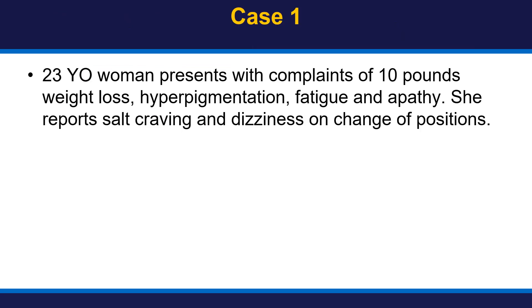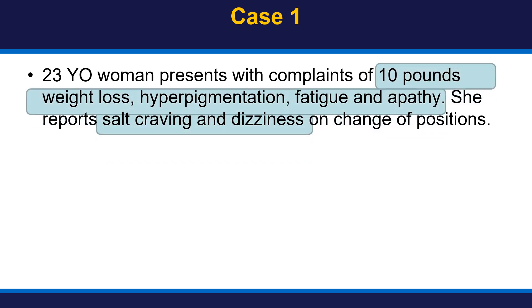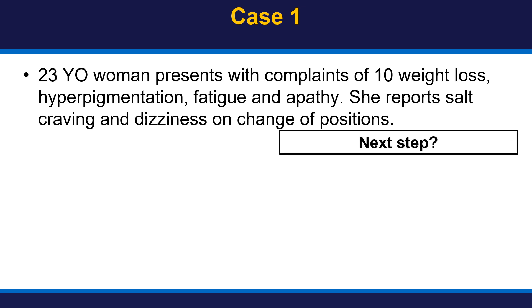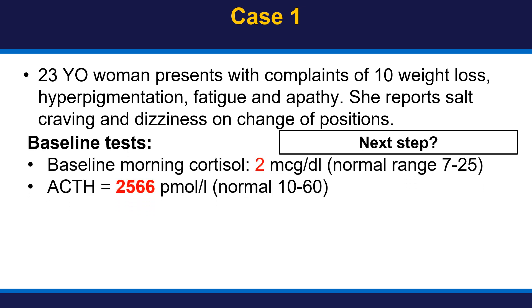Let's review several cases of adrenal insufficiency. Case number one: a 23-year-old woman who presented with complaints of 10 pounds of weight loss, hyperpigmentation, fatigue, and apathy. She reported salt craving and dizziness on change of position. These symptoms are seen in adrenal insufficiency, especially primary adrenal insufficiency, as she also has signs of aldosterone deficiency with salt craving and dizziness, and hyperpigmentation which is seen only in primary and not secondary adrenal insufficiency. With high clinical suspicion, the next step is to proceed with baseline tests including cortisol and ACTH.